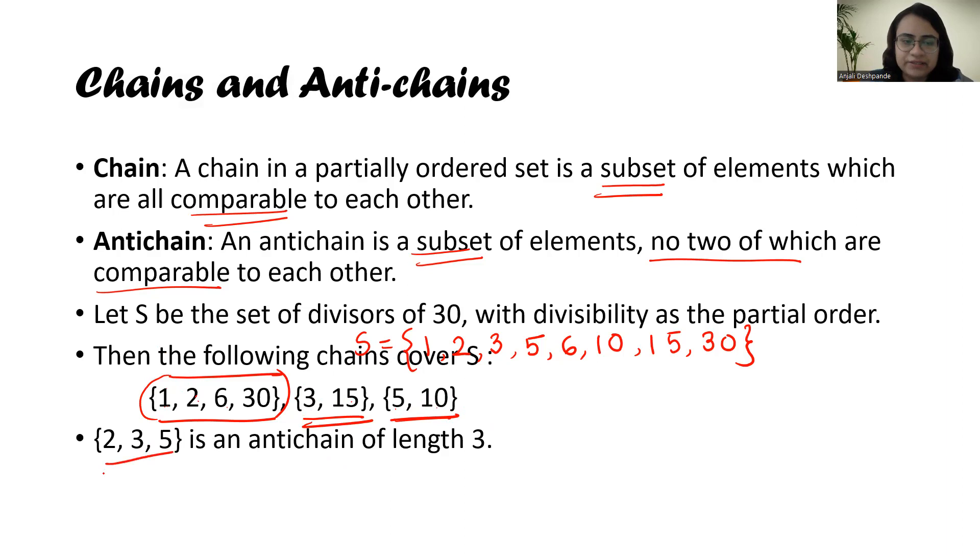Similarly, if I take another subset: 2, 3, 5, it is an anti-chain. Why? Because no two elements are divisible by each other. So here, 2 is not divisible by 3, 3 is not divisible by 2, 5 is not divisible by 3. So this is an anti-chain of length 3.